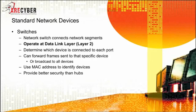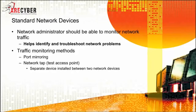That leads us to switches. The switch operates at the data link layer, or layer two. A network switch connects network segments and determines which device is connected to each port by its MAC address, providing much better security than hubs. The network administrator must be able to monitor all network traffic to identify and troubleshoot problems. There are two basic ways to do this: either by port mirroring or by placing a network tap — a separate device installed between two network devices.